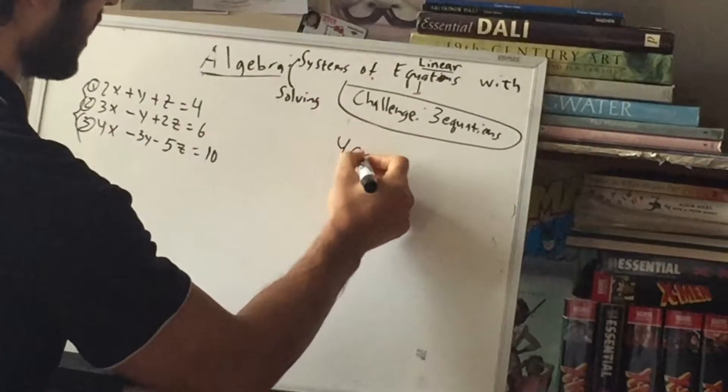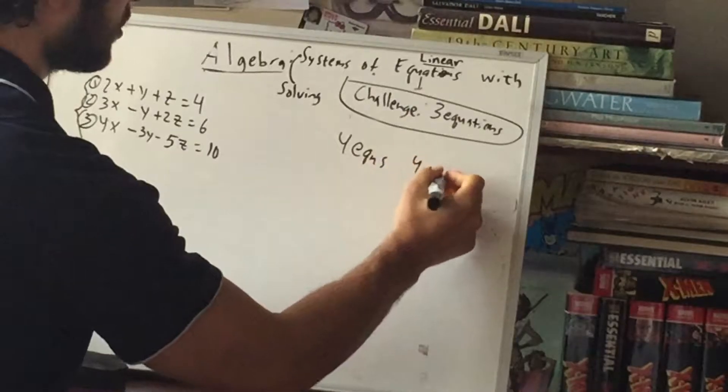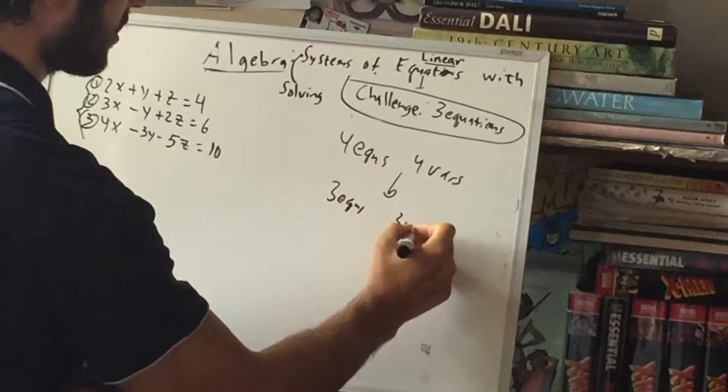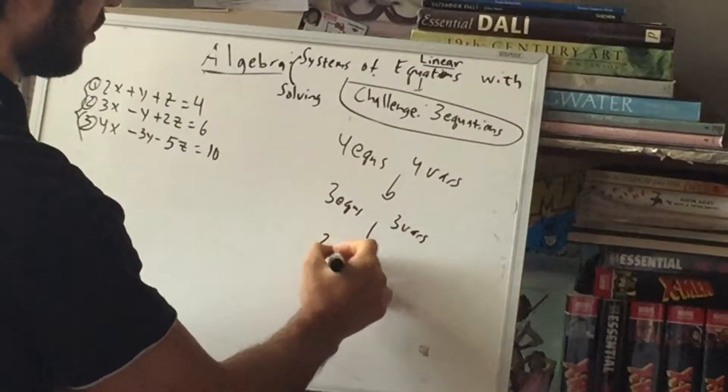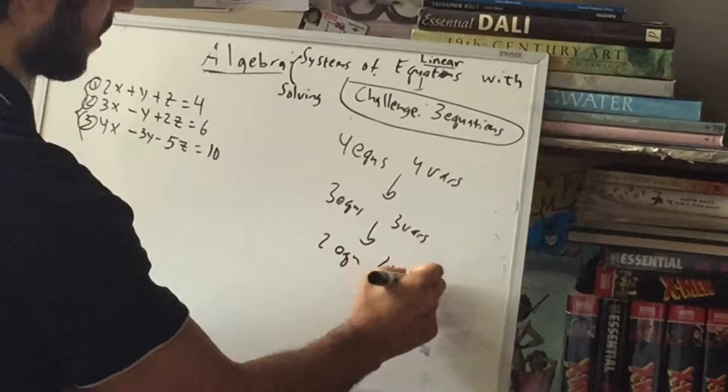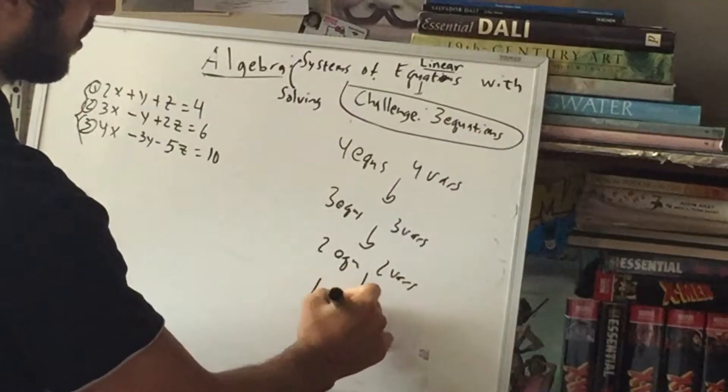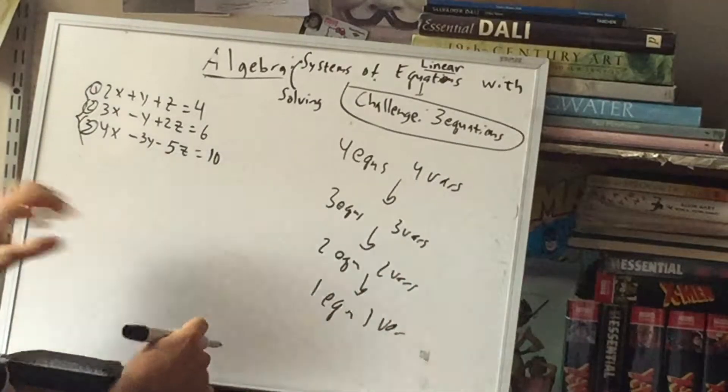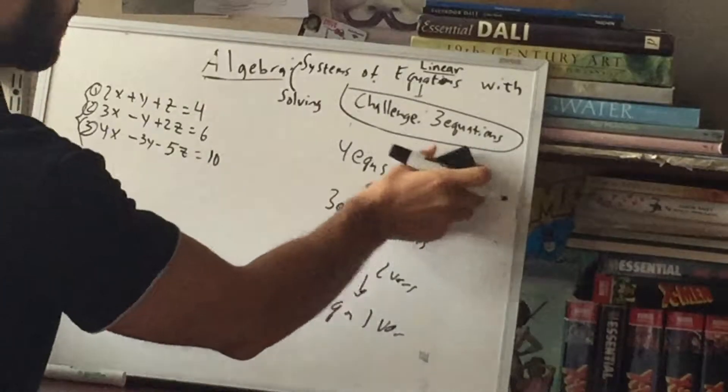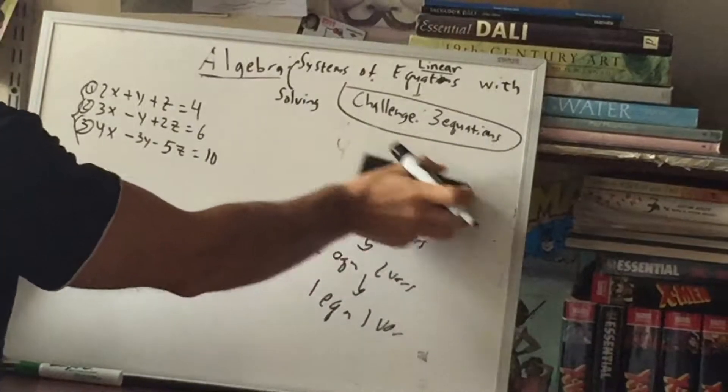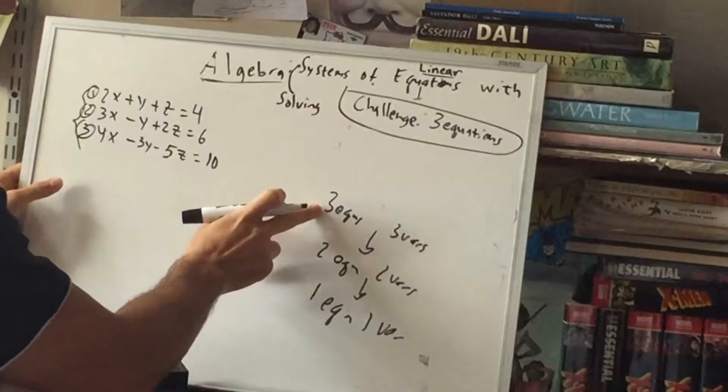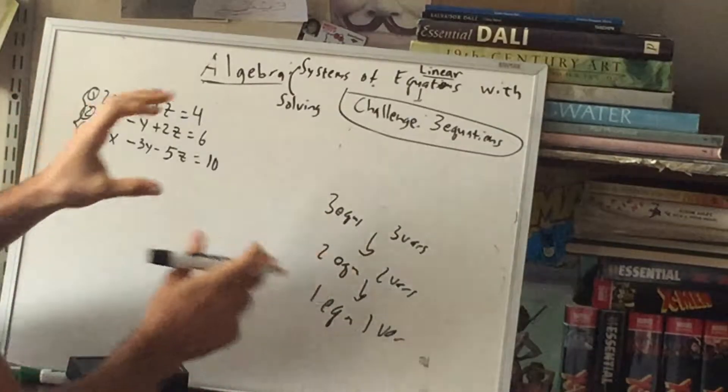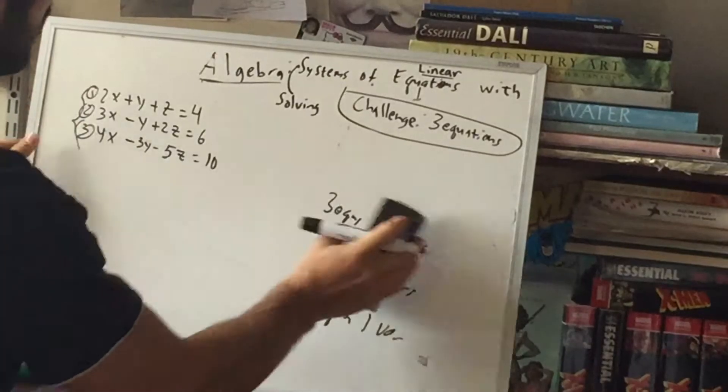So in general, if you have four equations, four variables, you want to try to get down to three equations and three variables. And then you're going to try to get down to two equations and two variables. And then one equation, one variable, and that's easy to solve. So we're not starting all the way here, but we are going to have to start here and create two different two equations and two variable problems. So let's see what I mean.